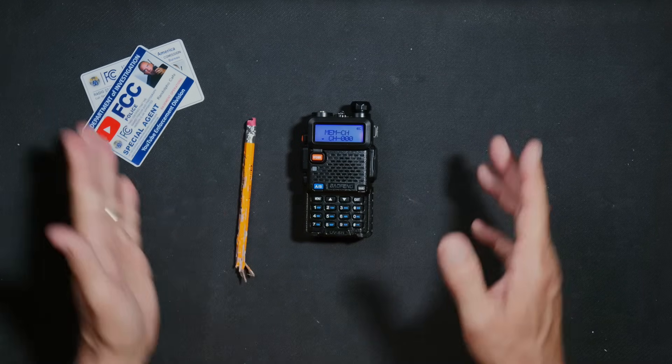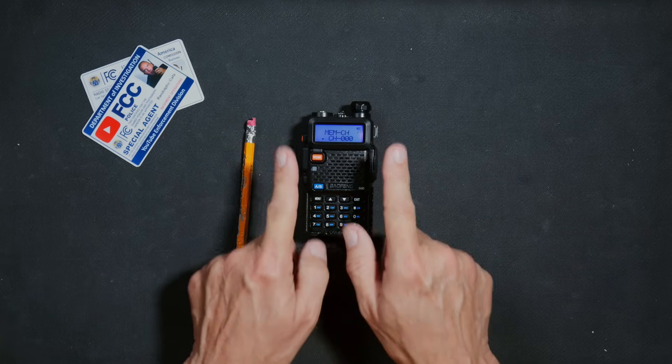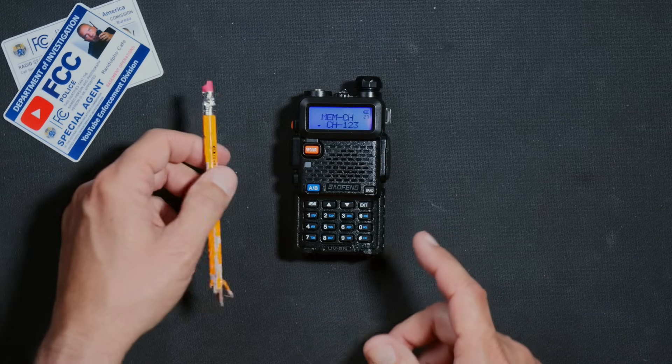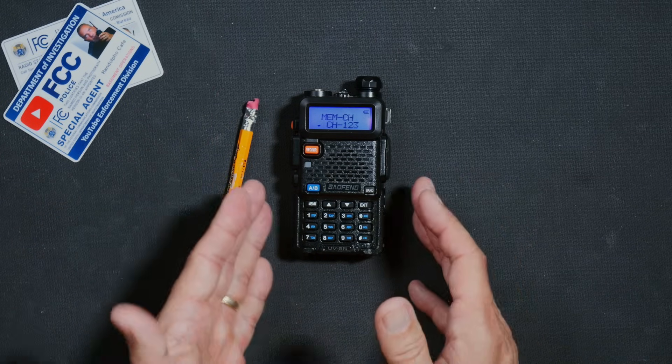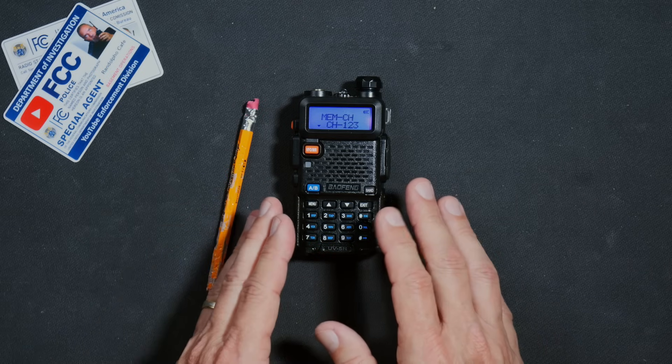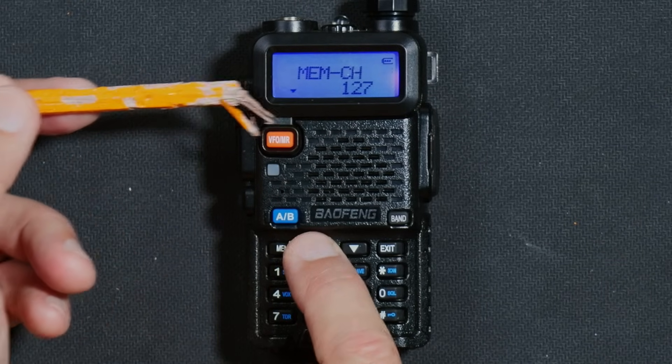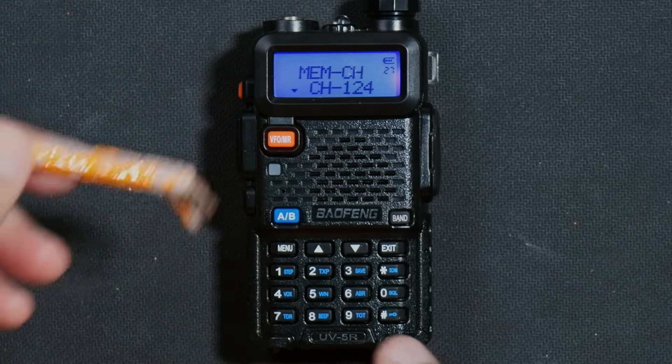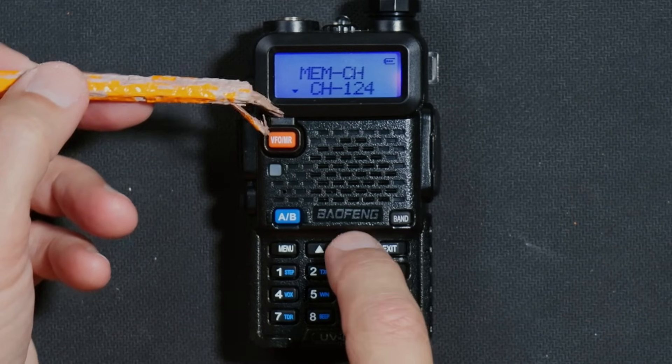Memory channel. Now this is where it gets a little bit confusing, so please pay very close attention. As you scroll through the different channel numbers to select which channel you want to store your frequency on, you will notice that some of them show just the number, like these, and others show the letters CH.